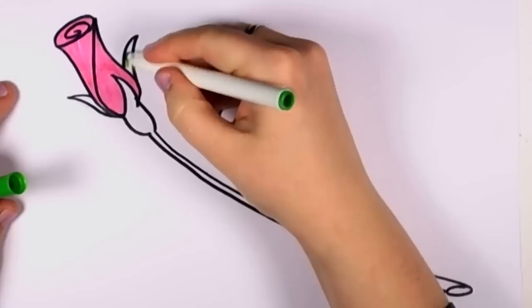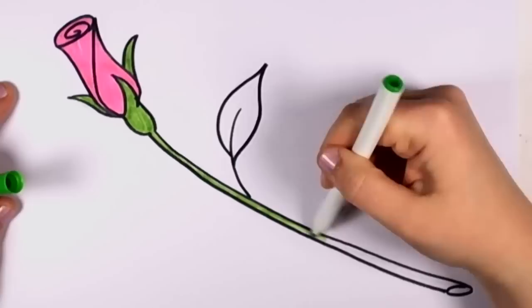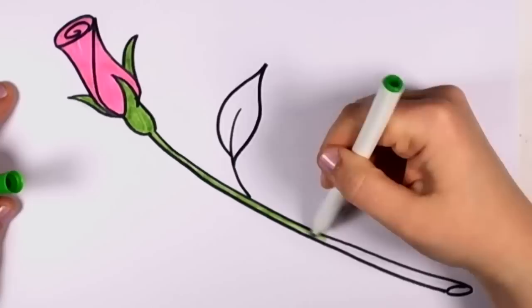And for the sepals and rose hips and stem and leaf, I'm going to use a bright lime green because I think it really pops, contrasts really nicely with that baby pink.